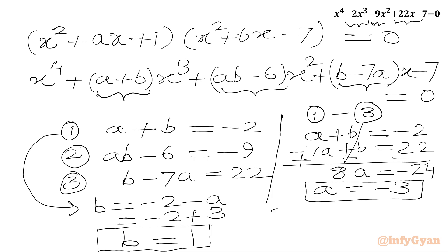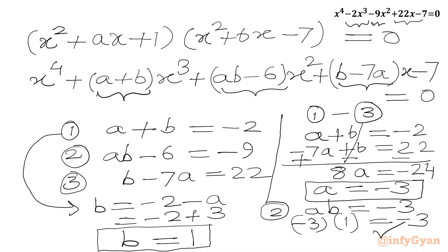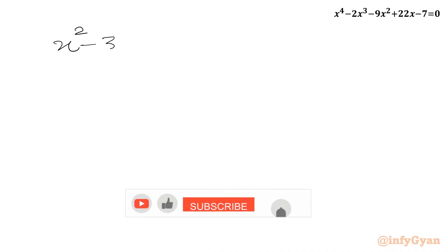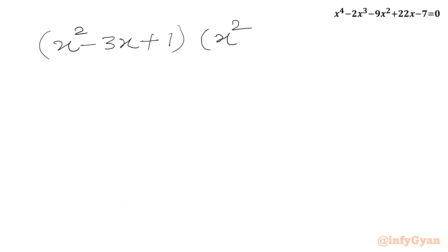Now we check equation 2: ab should equal -9 + 6 = -3. With a = -3 and b = 1, the product is -3, which is true. So we have a = -3, b = 1. Applying these values, we get (x² - 3x + 1)(x² + x - 7) = 0.